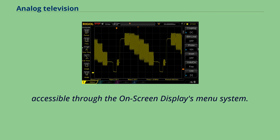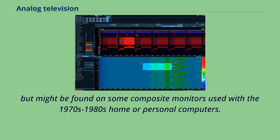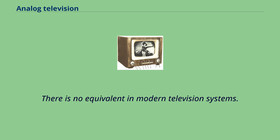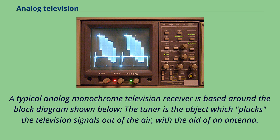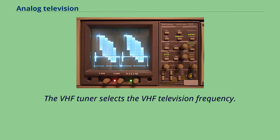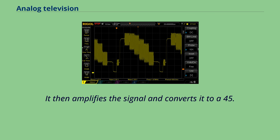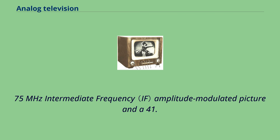A typical analog monochrome television receiver is based around a block diagram. The tuner plucks the television signals out of the air with the aid of an antenna. There are two types of tuners in analog television: VHF and UHF tuners. The VHF tuner selects the VHF television frequency, which consists of a 4 MHz video bandwidth and a 2 MHz audio bandwidth. It then amplifies the signal and converts it to intermediate frequency.